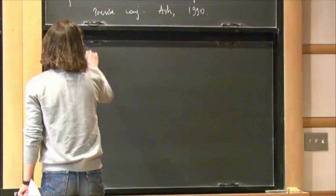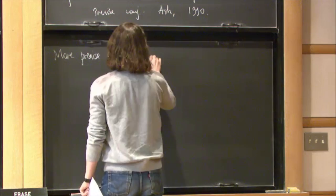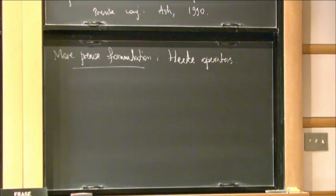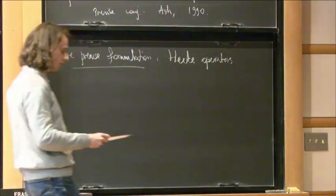So for a more precise formulation, I have to talk about Hecke operators. And it is because, so it's really crucial that I work with congruent subgroups here. And some of the way this congruent property is used is that it's possible to define Hecke operators. So how does this work?